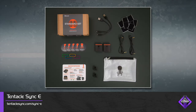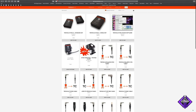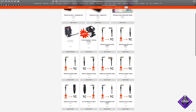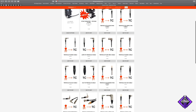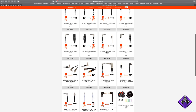Each unit comes with a USB-C cable for charging and connecting to the Tentacle Setup app, a mini-jack cable for connecting to cameras and sound recorders, a tentacle clamp for locking the cable to the Tentacle Sync E, velcro loop pads for mounting the Tentacle Sync E to any device, colored rubber bands for identifying each Tentacle Sync E, and a full Tentacle Sync Studio license. There are many different cables available on the Tentacle Sync website that allow you to connect to different cameras and sound recorders in different ways.